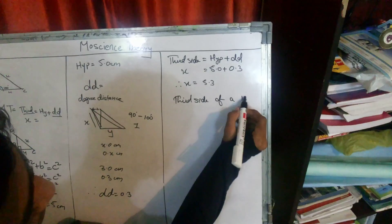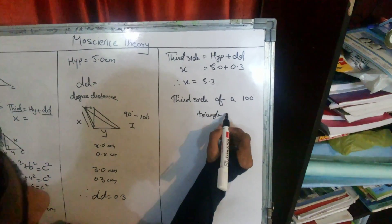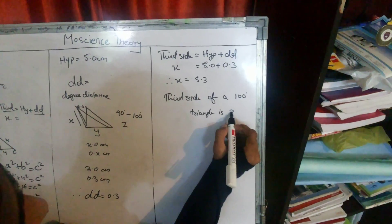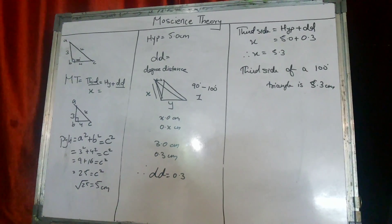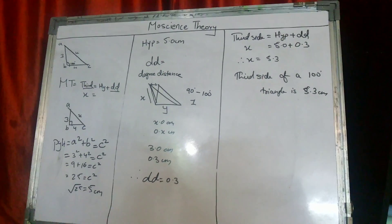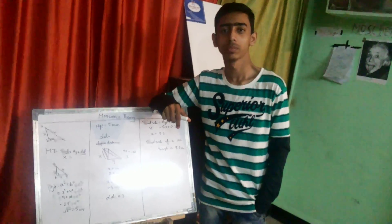of the 100 degree triangle is 5.3 centimeter. Thanks for watching.